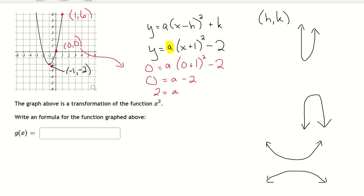So my final equation is going to look like this: y equals, or I guess g of x equals in this case, 2, since that's my a value, and then x plus 1 squared minus 2.